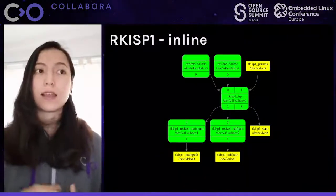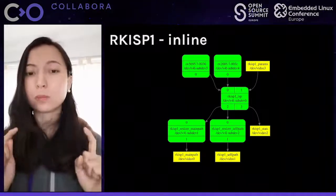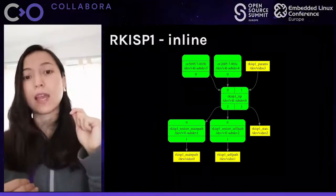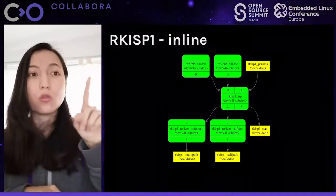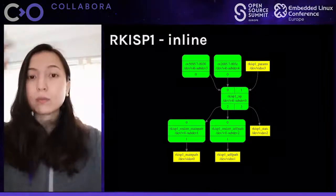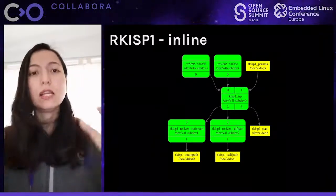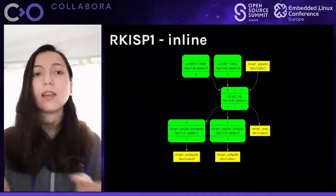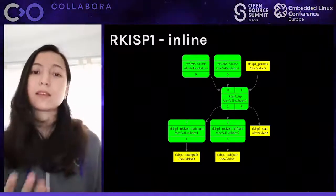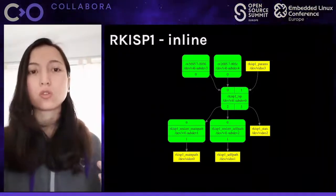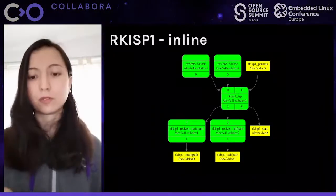Here is the topology of the RK ISP1 driver, which is inline. Specifically, this is the topology of the Scarlett Chromebook, a tablet with a back camera and a front camera. Those camera sensors are represented by the top blocks starting with OV, and only one of them can be connected to the ISP at a time — that's why one line is dashed. The ISP performs processing and outputs through one of the two paths: main path and self-path. This driver can also generate statistics and receive parameters from user space, similar to the Intel driver.